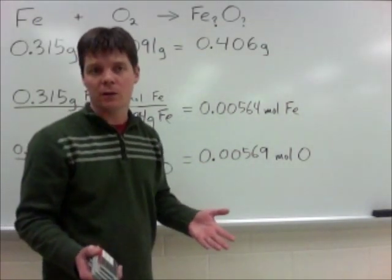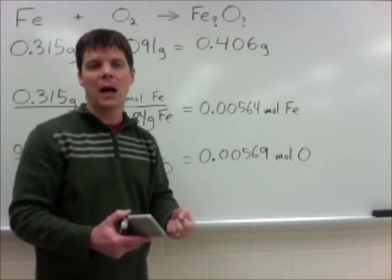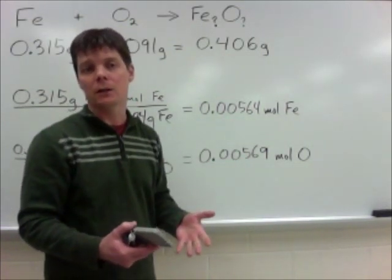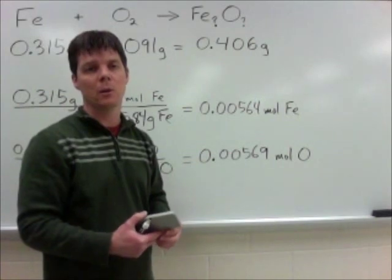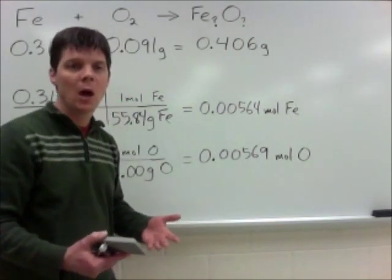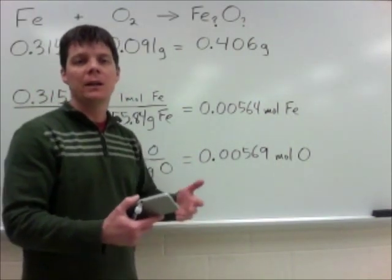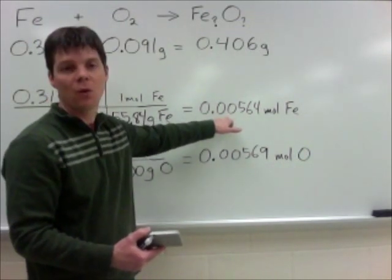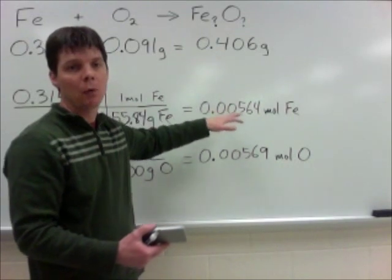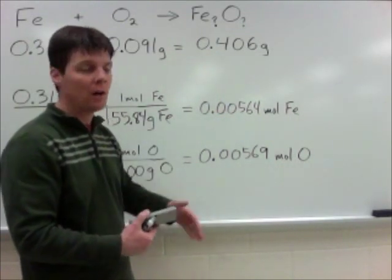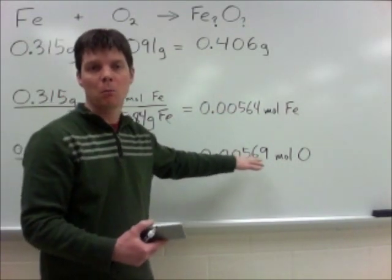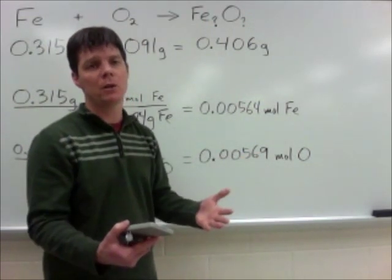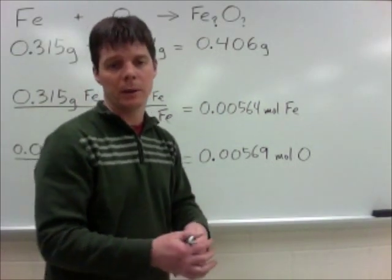Now I can see already where this is going. However, sometimes the decimal values that we calculate may not be immediately clear what ratio we should be determining. So here's our strategy. We always want to identify the smaller of the two mole values, and I can see that 0.00564 is the smaller of the two. I'm going to divide that number by itself. I'm also going to divide the other mole amount by the smaller of the two. And this is going to help me to establish what is that ratio between the two elements.